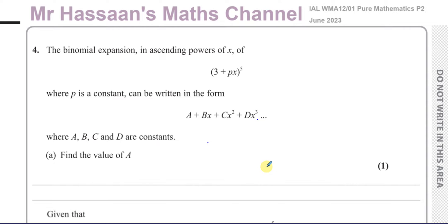Here we have a question about the binomial expansion in ascending powers of x of 3 plus px all to the power 5, where p is a constant that can be written in this form A plus Bx plus Cx squared plus Dx cubed, where A, B, C, and D are all constants. First of all, for one mark, find the value of A.